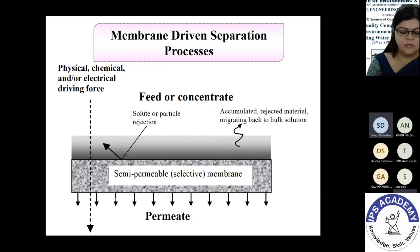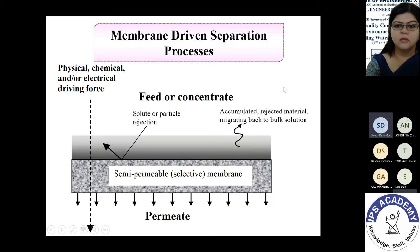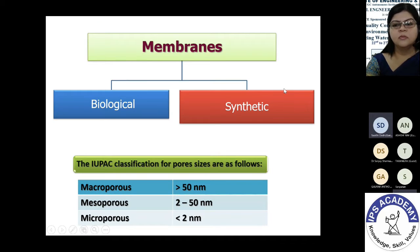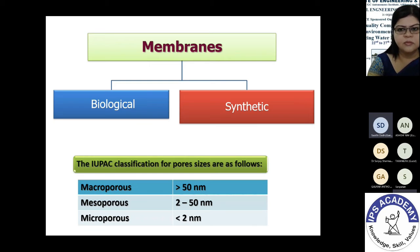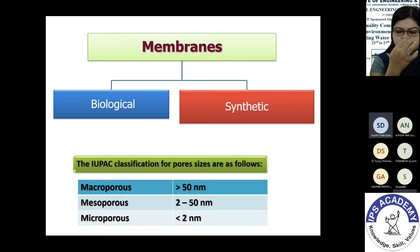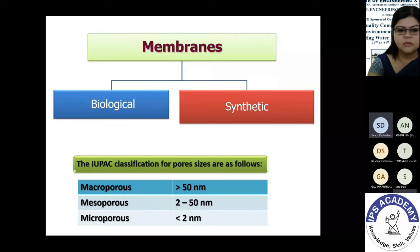During the process, treated water coming out from the membrane is called permeate, and the feed solution becomes concentrated. Broadly, membranes are divided into two categories: biological and synthetic. Biological membranes are inherent in our body and continuously act to separate toxic products. Synthetic membranes are man-made. The IUPAC classification divides membranes into three categories based on pore size: macroporous (greater than 50 nm), mesoporous (2–50 nm), and microporous (less than 2 nm).